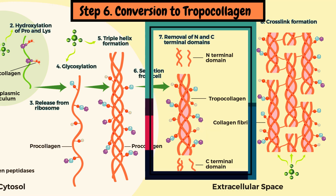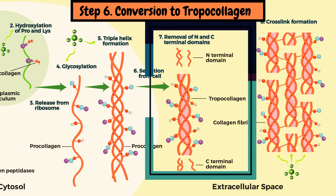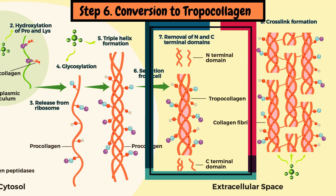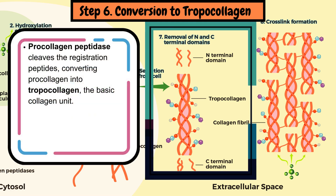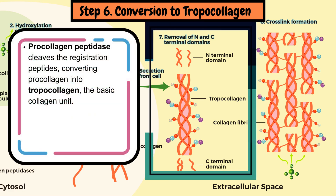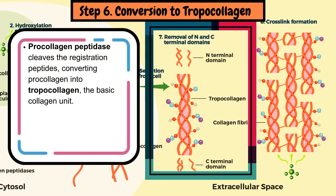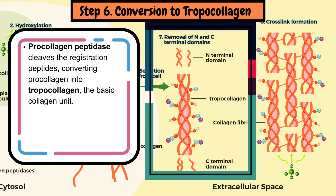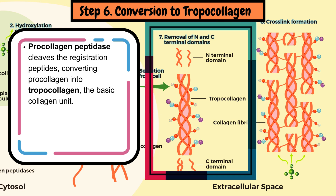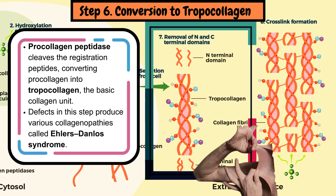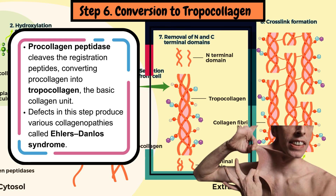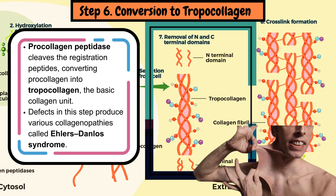Step 6: Conversion to tropocollagen. Procollagen peptidase removes the registration peptides, converting procollagen into tropocollagen — the basic collagen unit. Defects in this step lead to disorders like Ehlers-Danlos syndrome.